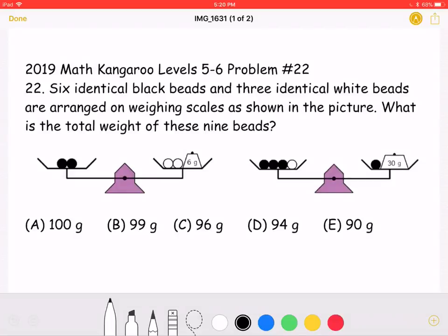This is the 2019 Math Kangaroo Levels 5-6, Problem Number 22. Six identical black beads and three identical white beads are arranged on weighing scales as shown in the picture. What is the total weight of these nine beads?